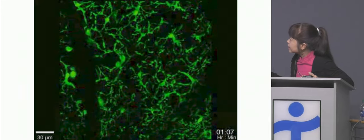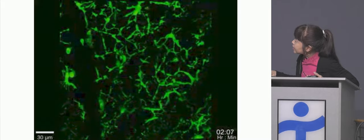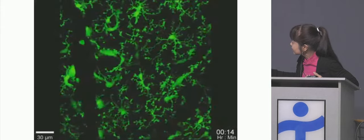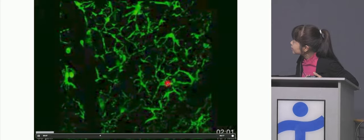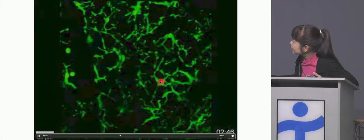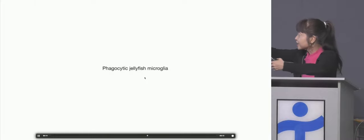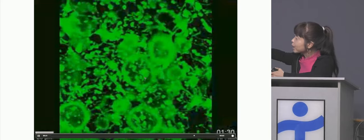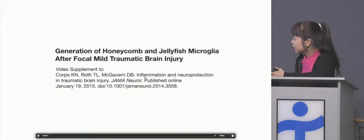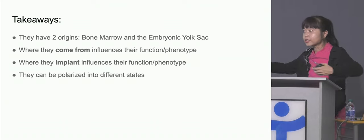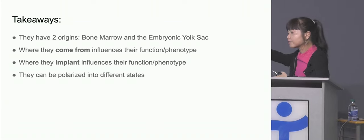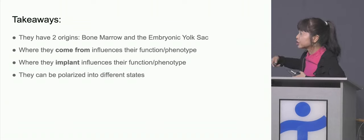Here we see damage that is done in the brain. Watch somewhere around here: you'll start to see a honeycomb shape forming. What you're seeing are these macrophages surrounding other cells to protect them from damage. And now you see them in their phagocytic, more M1 mode where they're swallowing up debris in the brain. So you have one state where they're protecting the cells, surrounding them, and another phase where they're actually swallowing up whatever damaged tissue is around.